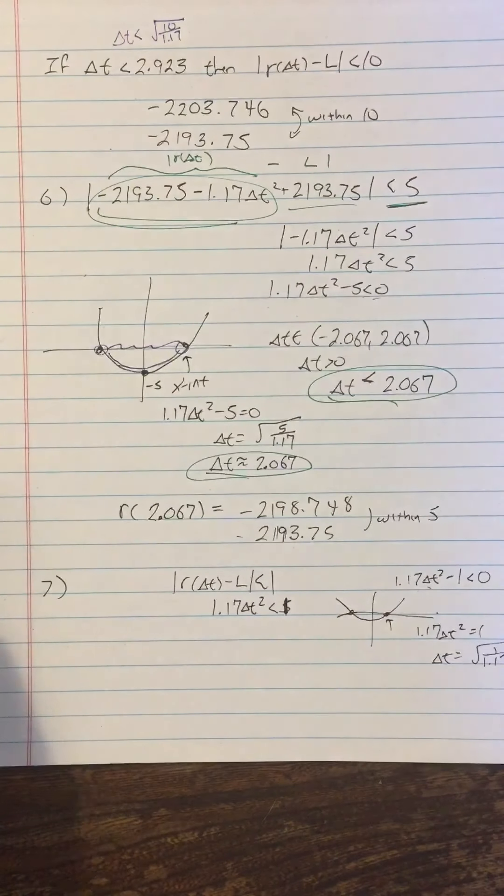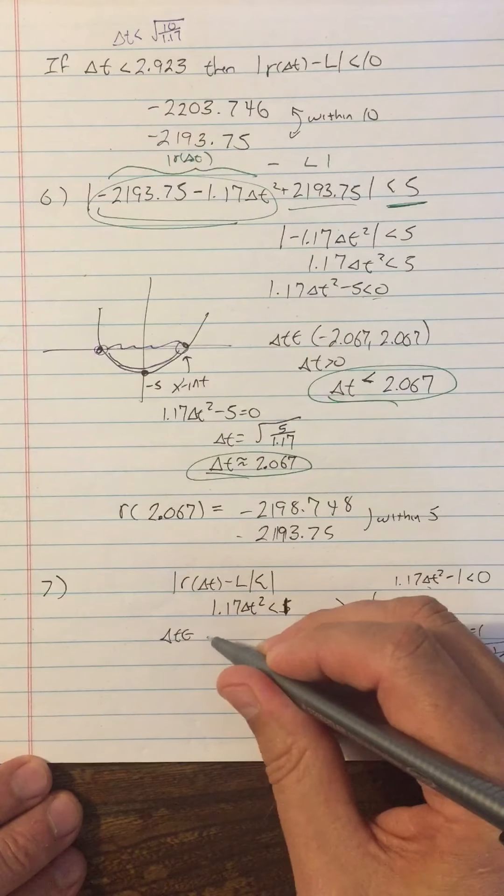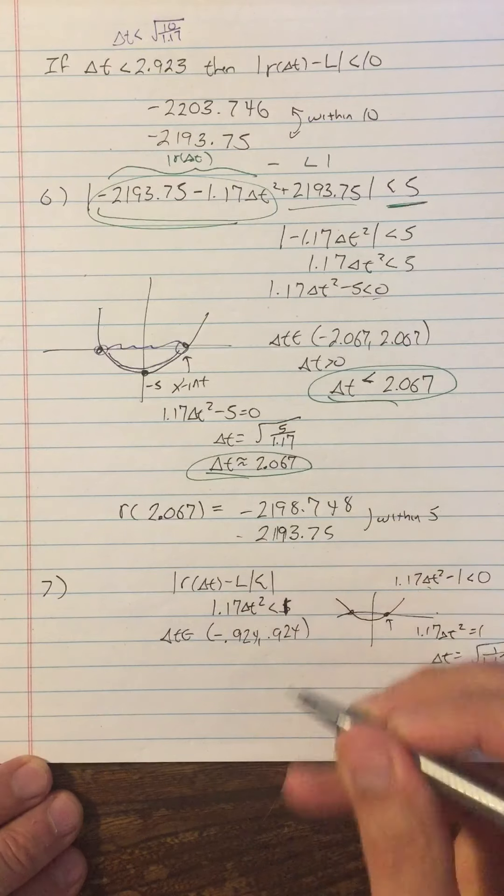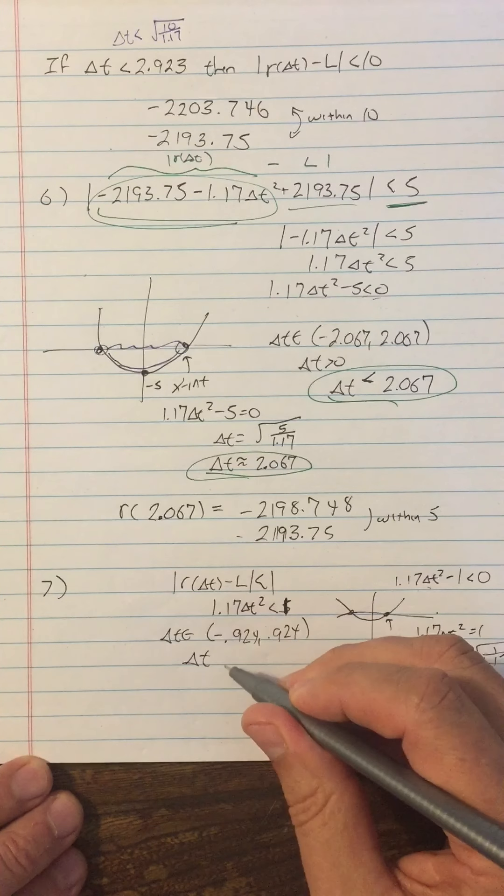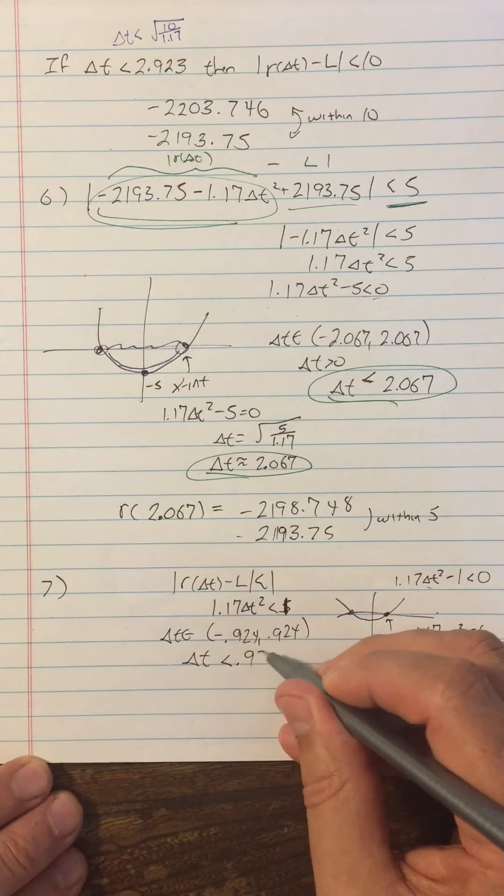And I know that the solution to the inequality is delta t is an element of the interval from negative 0.924 to positive 0.924. But what that amounts to, since our delta t is greater than zero, delta t is less than 0.924.